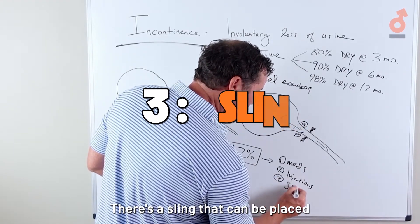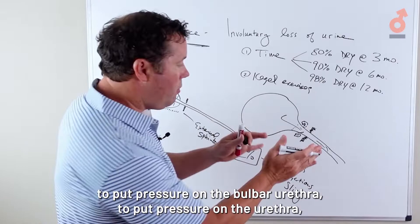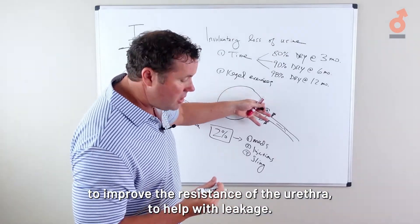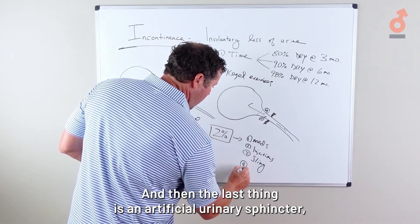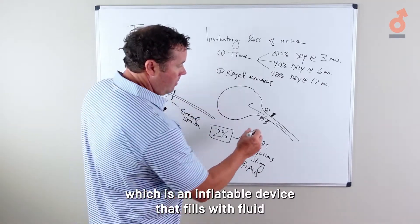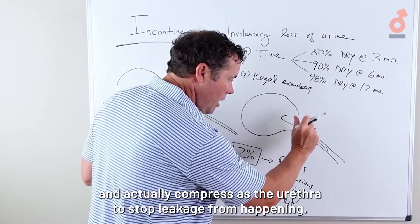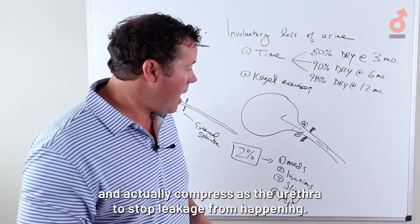Three, there's a sling that can be placed to put pressure on the bulbar urethra to improve the resistance of the urethra to help with leakage. And then the last thing is an artificial urinary sphincter, which is an inflatable device that fills with fluid and actually compresses the urethra to stop leakage from happening.